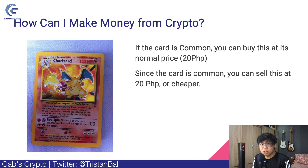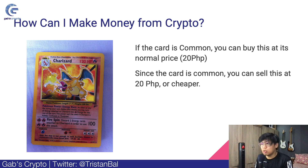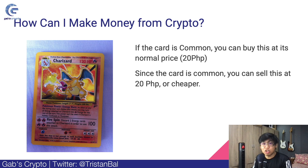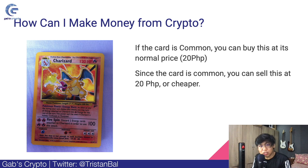Now, the next question is: how can I make money from crypto? Let's use a Pokémon card concept. Let's say you have a Charizard card that is common everywhere — you can buy it at a normal price of 20 pesos. Since the card is common, you can sell it anywhere, but also at around 20 pesos. If nobody wants to buy it, you might even sell it cheaper — like 10 pesos — just to make a sale. So there's no demand but plenty of supply of Charizard, making it very cheap.